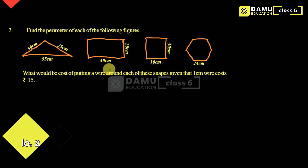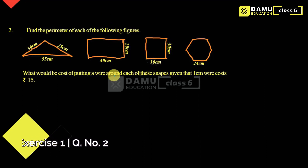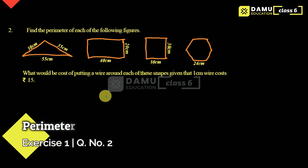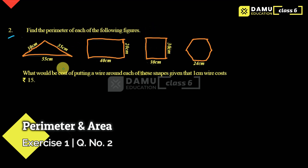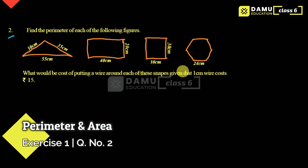Hello viewers, thanks for watching our videos. If you haven't subscribed yet, please subscribe and click the bell icon. In this module we are going to discuss the solution for the second question: find the perimeter of each of the following figures. They are given some shapes — triangle, rectangle, square, and regular hexagon. The cost of putting a wire around each shape is given as 15 rupees per centimeter.